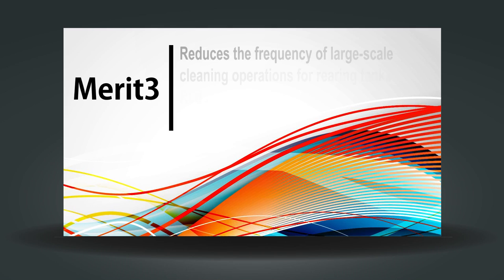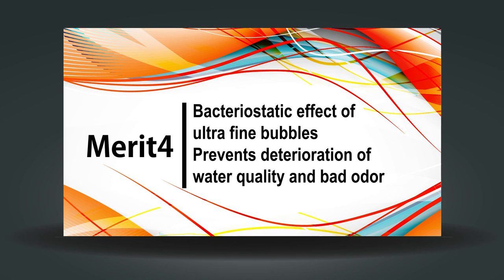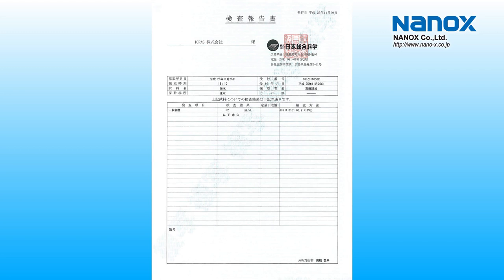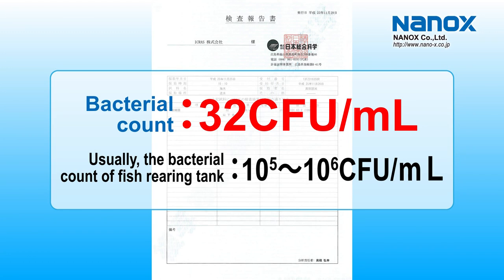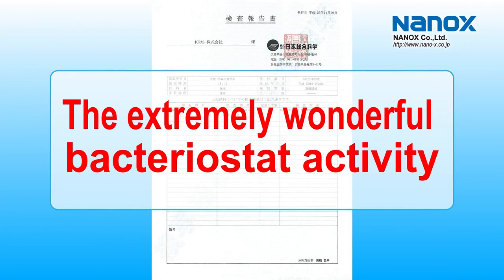This cleaning effect reduces the frequency of large-scale cleaning operations for rearing tanks, making it possible to reduce stress to fish and the number of workers required. Ultrafine bubbles also have a bacteriostatic effect to retard decay of excess feed and dead fish in breeding water tanks, preventing deterioration of water quality and bad odor. This table shows the result of a bacteriological examination in CFU (Colony Forming Unit) of a rearing tank at Ikulasu company using oxygen ultrafine bubbles. The bacterial count in the rearing tank is limited to only 32 CFU — very scarce, as usually the bacterial count of a fish-rearing tank attains 10 to the 5th or 6th power CFU. We can clearly understand that ultrafine bubbles have extremely effective bacteriostatic activity.